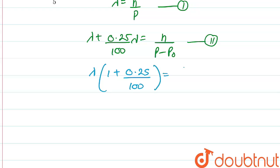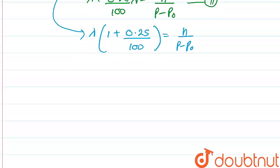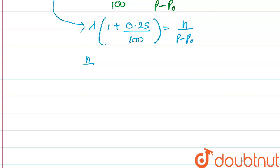equal to h upon p minus p0. Putting the value of lambda from equation 1, we will be getting h upon p into 1 plus 0.25 upon 100 equal to h upon p minus p0.